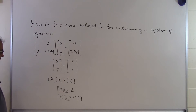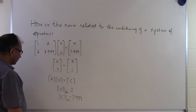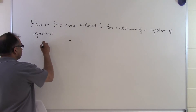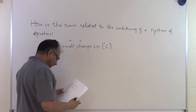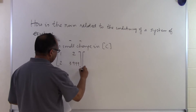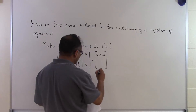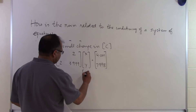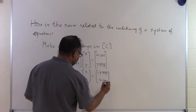Now we want to change the right-hand side vector and see what happens to the resulting solution vector. We rewrite the equations with the same coefficient matrix [1, 2; 2, 3.999] but make a small change to the right-hand side: instead of 4 we use 4.001, and instead of 7.999 we use 7.998. Solving these new equations gives x, y equal to minus 3.999 and 4.00.